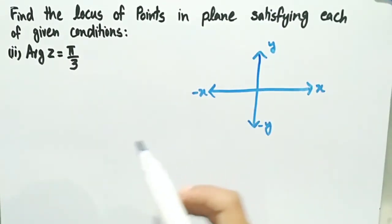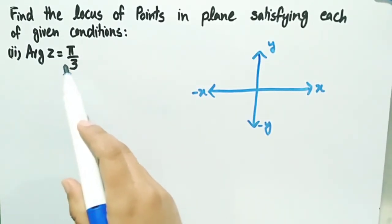The second one is argument of z equals pi by three. We know that argument of any complex number is the value of angle that it makes with positive x-axis. Here argument of z equals pi by three means that z makes an angle pi by three with positive x-axis.